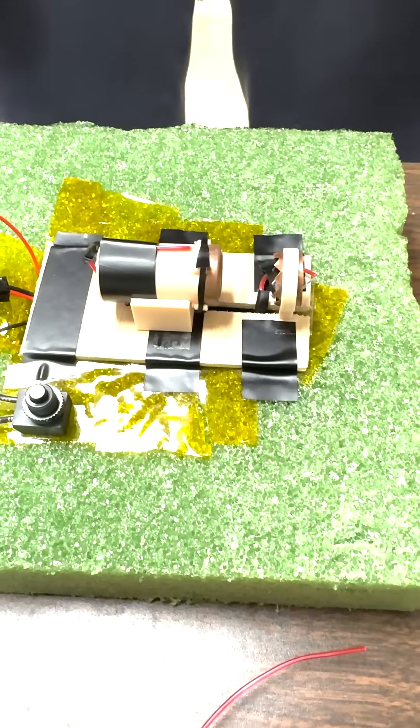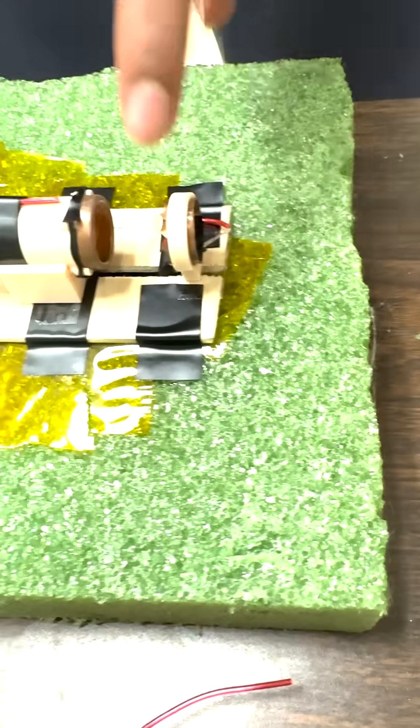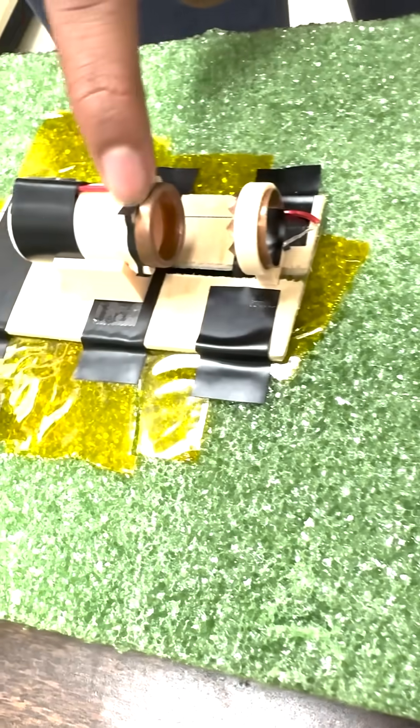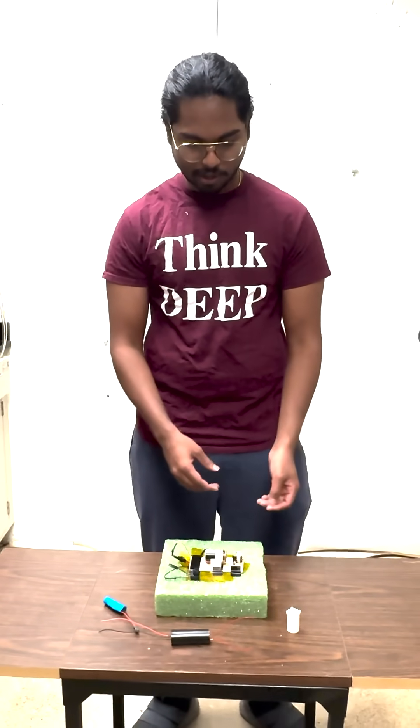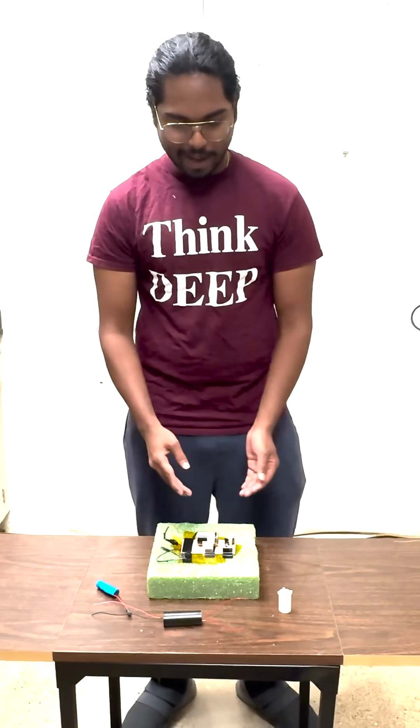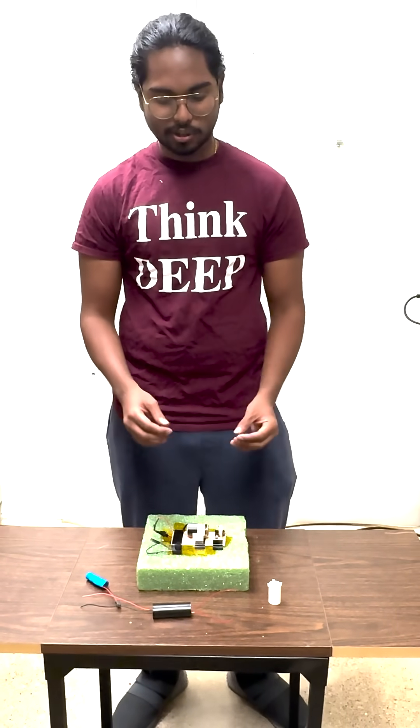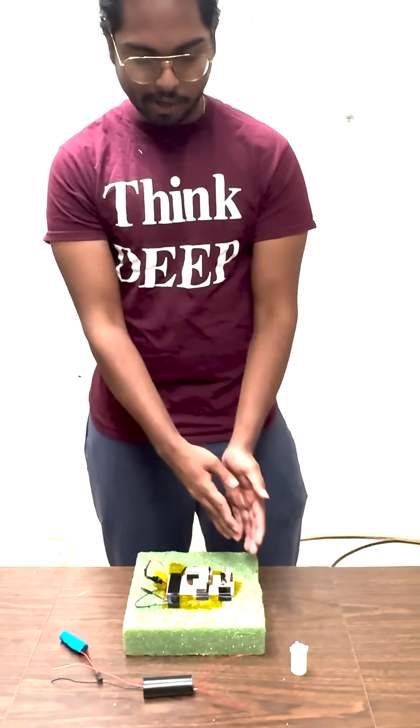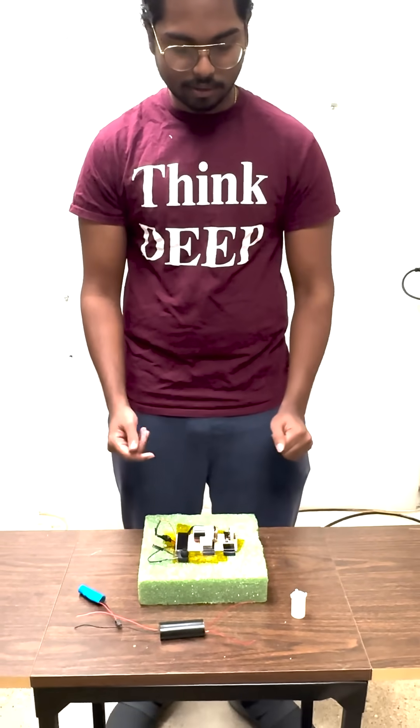So the negative terminal of the transformer is connected to the pointy edge and the positive terminal is connected to the smoother surface. The pointy end allows the electrons to jump easily from the copper and the smoother surface allows for the electrons to latch onto the copper surface. This allows an ionic wind to happen very easily.